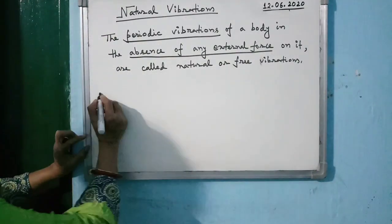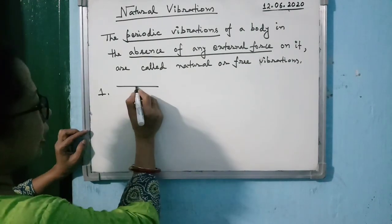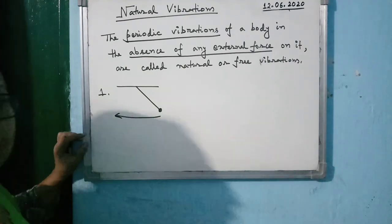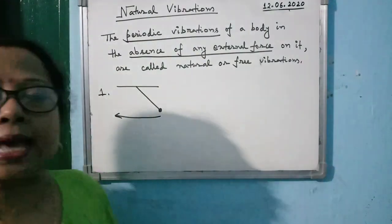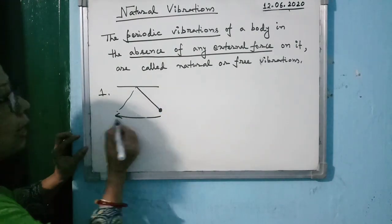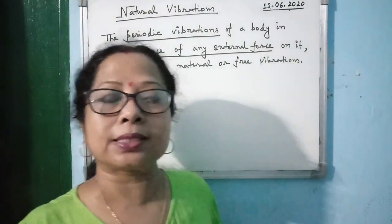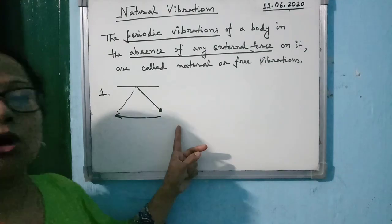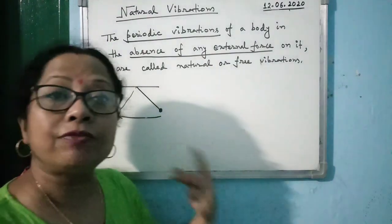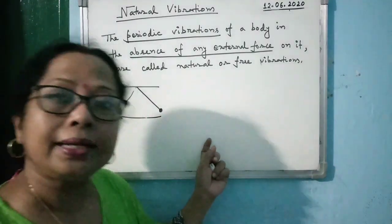The periodic vibration of a body in the absence of any external force on it is called natural or free vibration. The first example is a pendulum. When you take a pendulum to its extreme position and release it, no force is acting on it. The pendulum will oscillate to and fro. If it is in a vacuum with no air resistance, no resistive force acts, and the pendulum vibrates due to the weight of the bob — that is, due to gravitational force only.